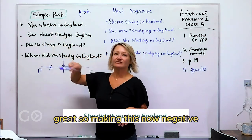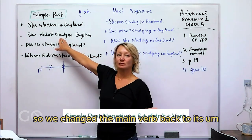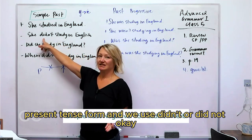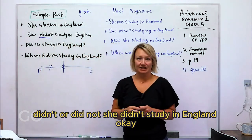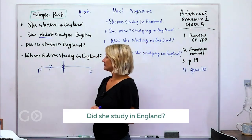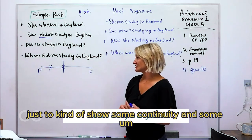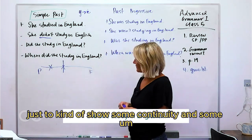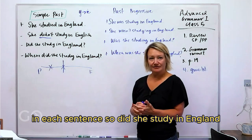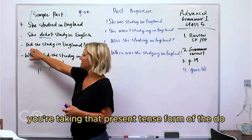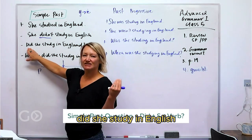Making this negative: 'she didn't study in England.' We change the main verb back to its present tense form and we use 'didn't' or 'did not.' For a question: 'Did she study in England?' We use the present tense form of the auxiliary 'do' in the past — 'did.'